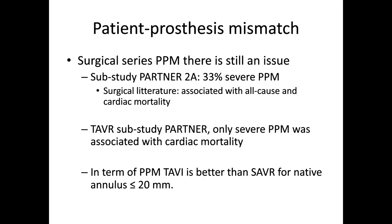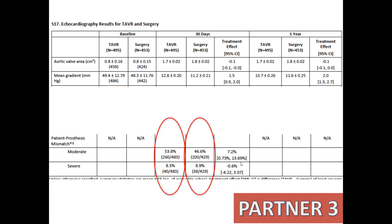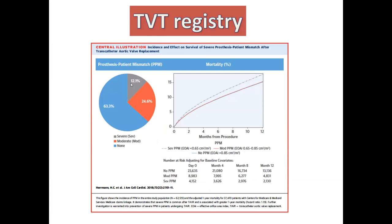In the PARTNER 3 trial in the TAVR cohort, we have 53% moderate PPM and 8% severe PPM — this is an intraannular valve. For surgery, there's a little less moderate PPM but about the same severe PPM. For the intraannular valve, it's fairly comparable. The supraannular valve has a definite hemodynamic advantage in terms of PPM. In the TVT registry, there is 12% severe PPM and approximately 25% moderate PPM in all TAVR valves.